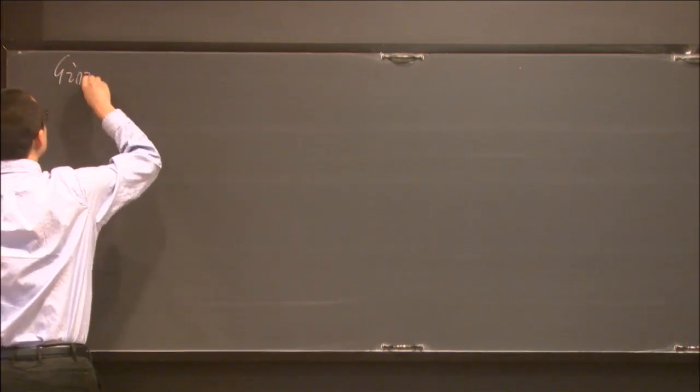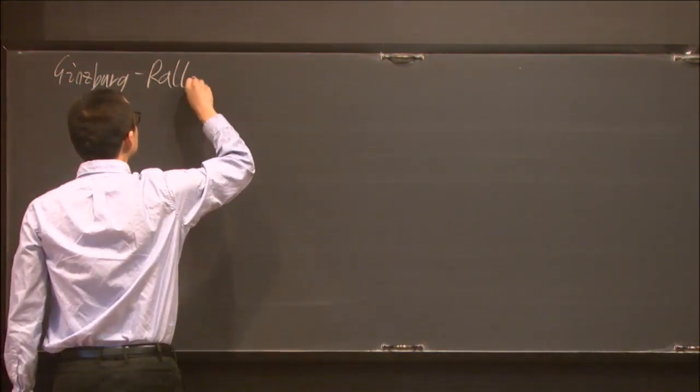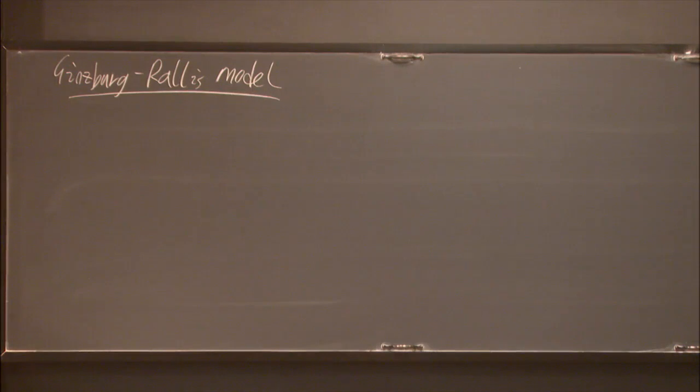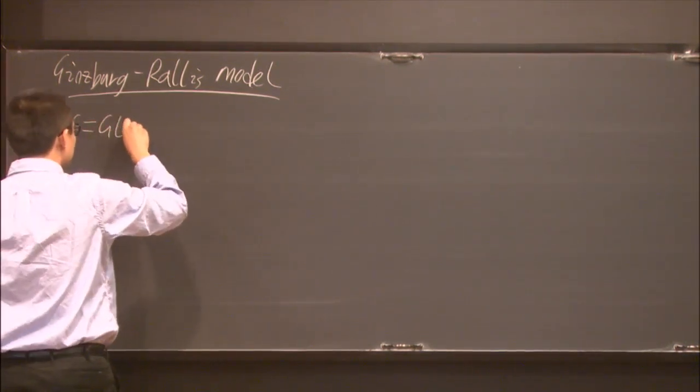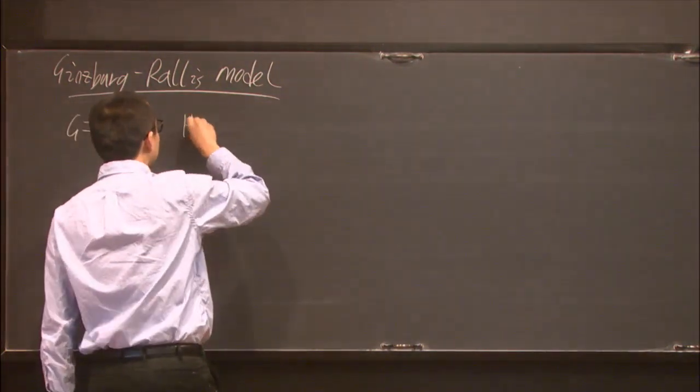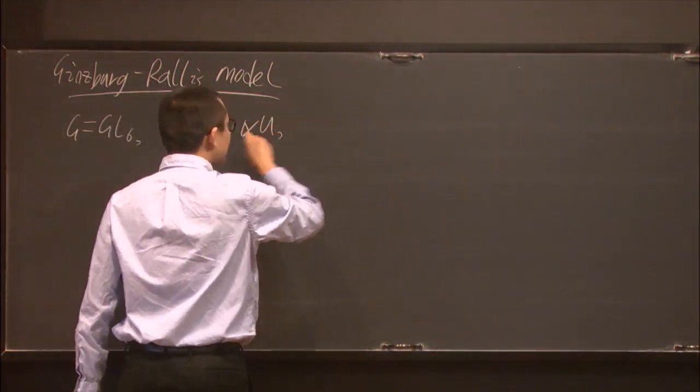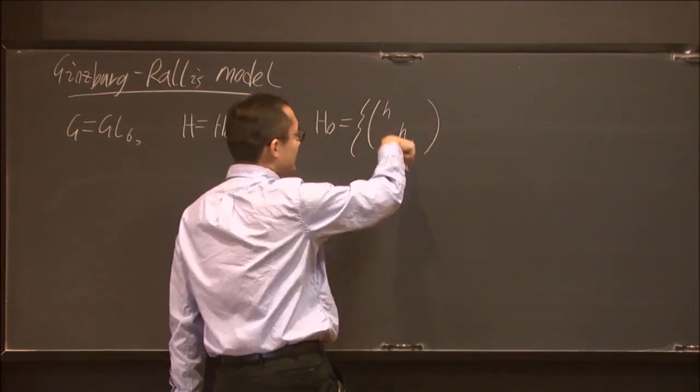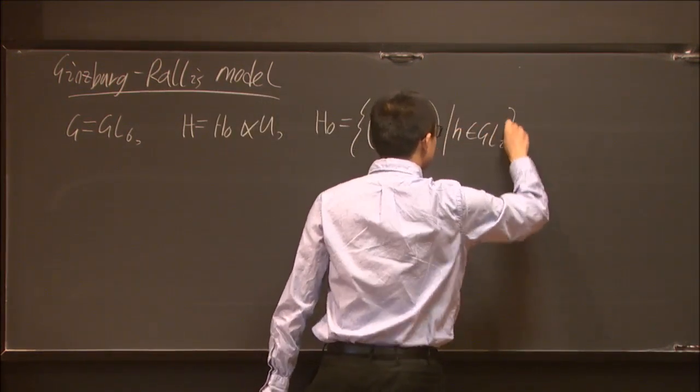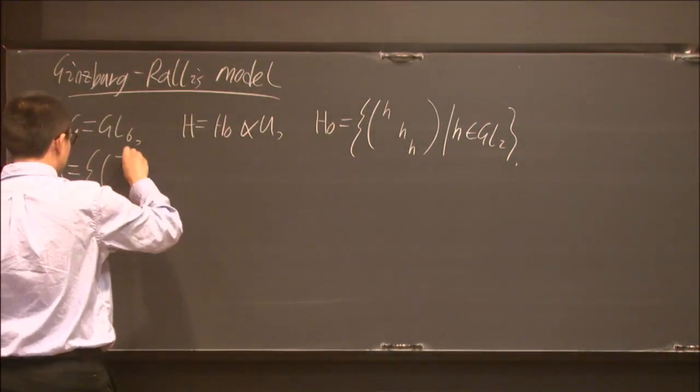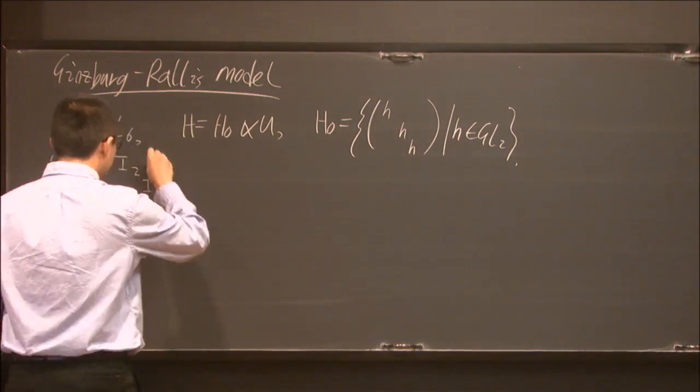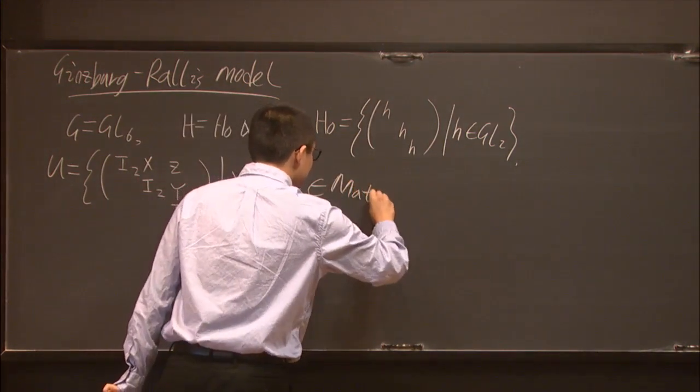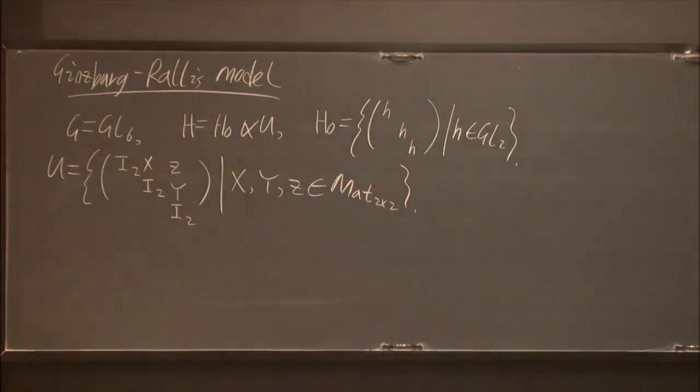Let's talk about the Ginzburg-Rallis model. I only need to tell you what is G, what is H, and what is omega. In this case, G will be GL_6. Your H has two parts - it will be the semidirect product of H_0 and U. Here H_0 will be the diagonal GL_2, so H×H×H in GL_2. And U will be basically some unipotent subgroup, so it will be (I_2, I_2, I_2) with X, Y, Z, where of course X, Y, Z are 2 by 2 matrices. So now we have the group.